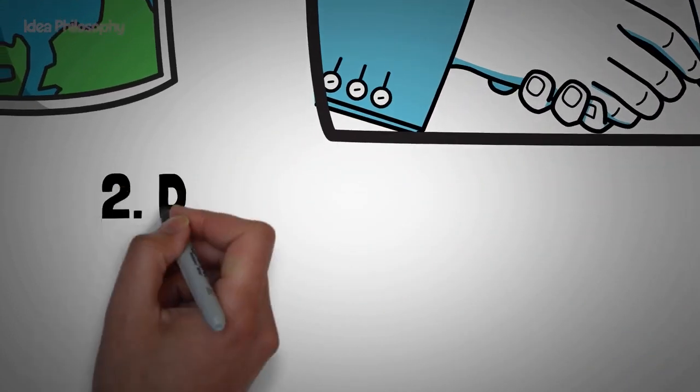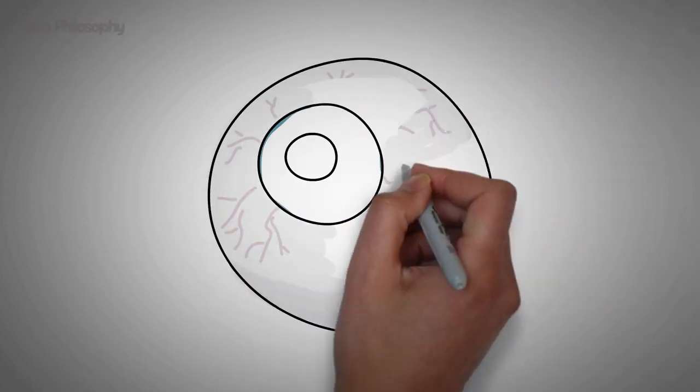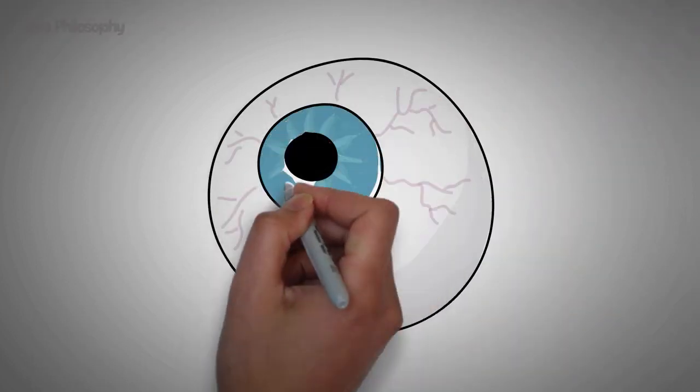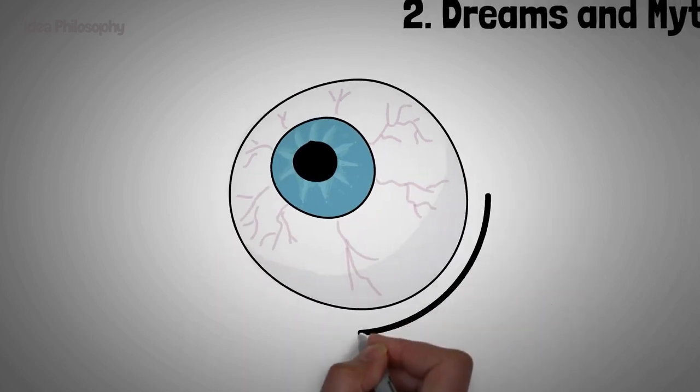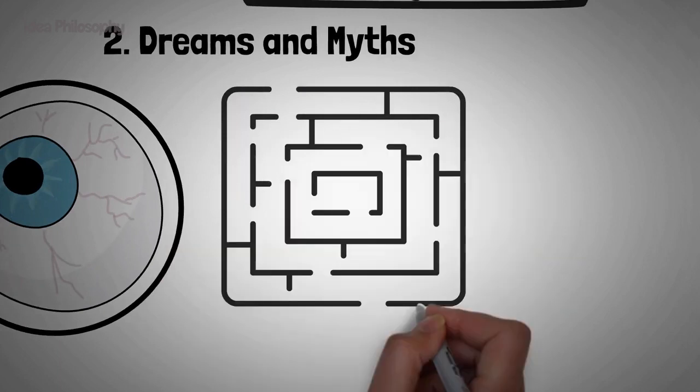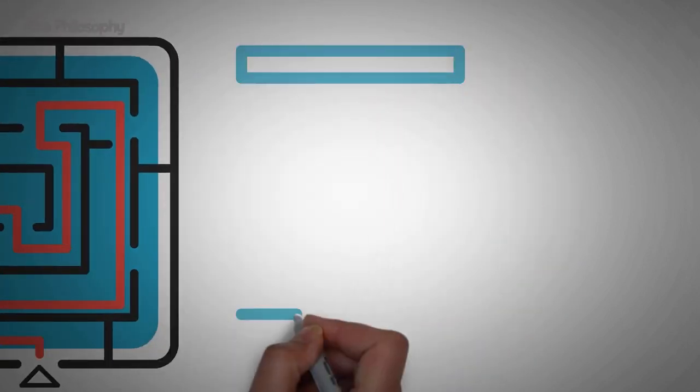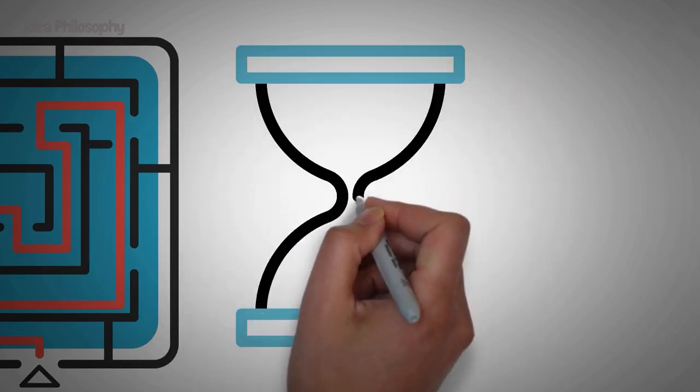Dreams and myths. According to Jung, archetypes frequently appear in dreams and myths. These symbols are used to convey messages in people's subconscious. Jung's dream analysis is a crucial tool for understanding the role of archetypes in dreams.